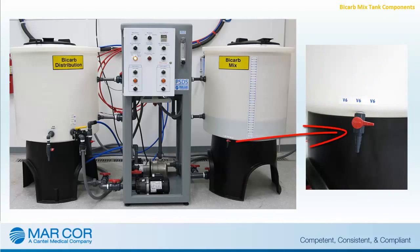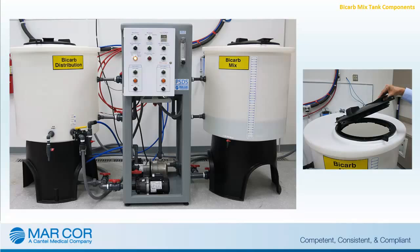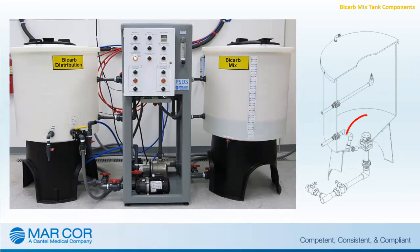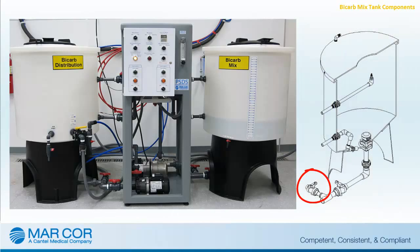A sampling port is located at the bottom of the mix tank for testing and sampling purposes. A hinged cover with an O-ring seal is provided on the top of the mix tank for easy access and secure closure. A mix nozzle is located at the bottom of the mix tank to aid in the mixing of powdered bicarb. A carbon vent filter connected to the top of the mix tank and distribution tank inhibits dust or other debris from entering the system. A drain valve is provided to allow discharge of unused solution or rinse water.